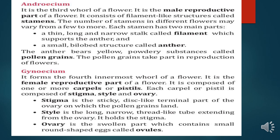The last one is Gynoecium. It forms the fourth and innermost whorl of a flower and is the female reproductive part. It is composed of one or more carpels or pistils. Each carpel or pistil is composed of stigma, style, and ovary. Stigma is the sticky disc-like terminal part. Style is the long, narrow thread-like tube. Ovary is the swollen part which contains eggs called ovules.